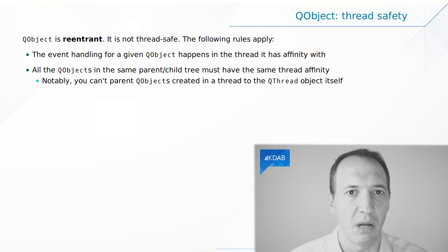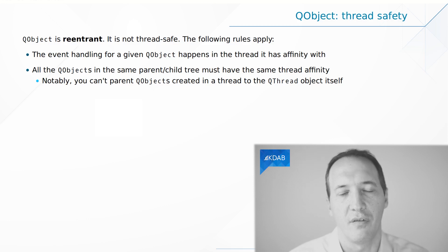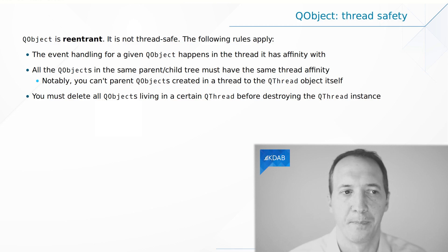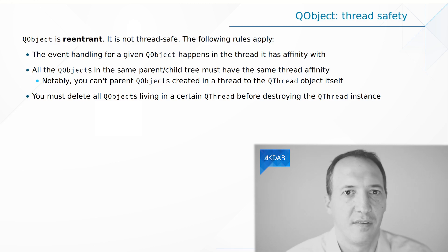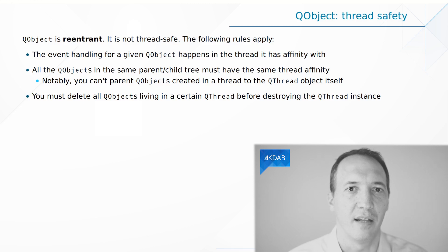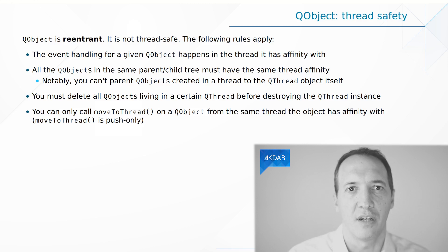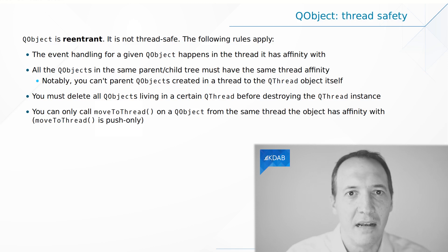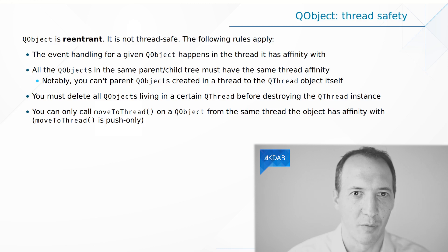You have to be careful when you derive from QThread and create objects — you shouldn't pass the thread as a parent to these objects because they live in different threads. If you do this wrong, you will get warnings from Qt at runtime. You should also delete all QObjects that live in a certain thread before you terminate the thread; otherwise, any events sent to those objects cannot properly be processed. One thing to know about MoveToThread is that it's push-only — you can only give an object from the current thread to another thread. You cannot steal an object from another thread, as that's going to be racy with the event handling. Think of it as push-only: it's all about giving, not stealing.